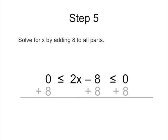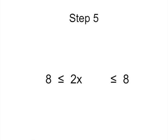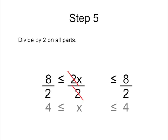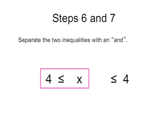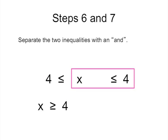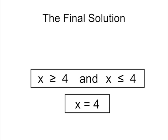Then, solve for x by adding 8 to all parts and dividing by 2 on all parts. And finally, separate the two equations with the word 'and,' because the original inequality started out with the less than symbol. Remember, it is very important that when the final solution is written, to always write the answer lowest value first with the letter on the left. The final solution is now complete, which can be written as either a conjunction or as a single equality.